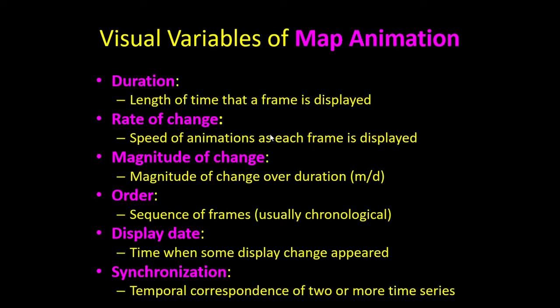The same visual variables mentioned earlier for static or paper maps are also applicable to animated maps. However, there are variables specific to map animation. Duration is essentially the length of time a particular frame is displayed. If most frames are one second long but one frame is five seconds, the viewer is going to give more attention to that longer frame. With duration, a particular frame can be emphasized or de-emphasized based on how long it's visible to the map viewer.